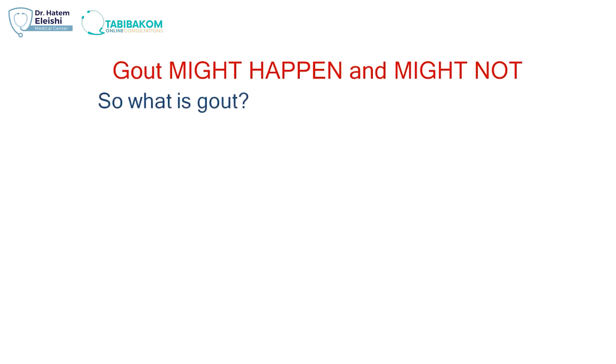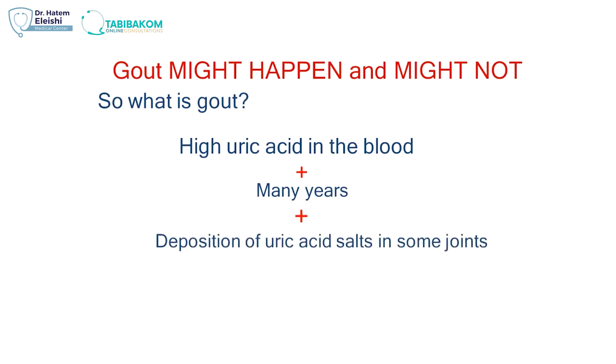So what is gout? Gout is high uric acid in the blood, and you have this high uric acid in a state of supersaturation, and it takes many years, and this gout starts to deposit. After many years, it deposits in the tissues, one of them is the joints, and in the end when it deposits, only 20% of those people who have a deposition of uric acid, only 20%, the joint disease we call gout might happen.